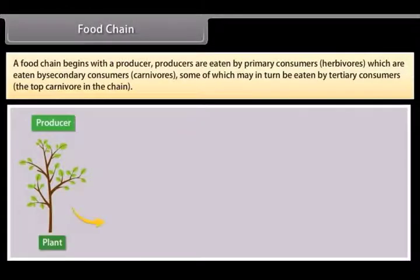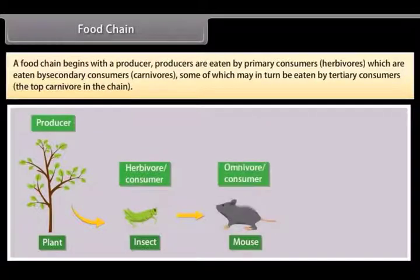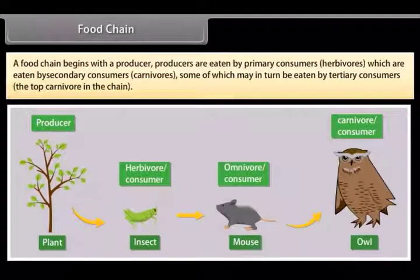Producers are eaten by primary consumers, herbivores, which are eaten by secondary consumers, carnivores. Some of which may in turn be eaten by tertiary consumers, the top carnivore in the chain.